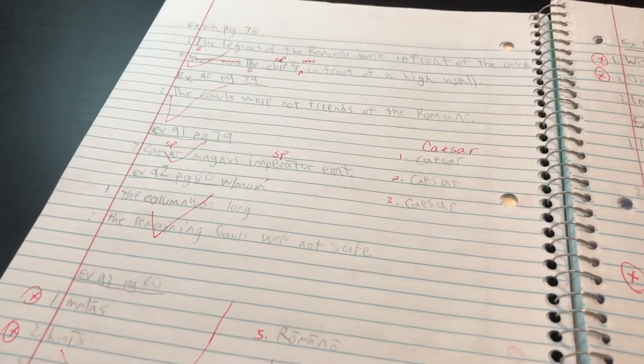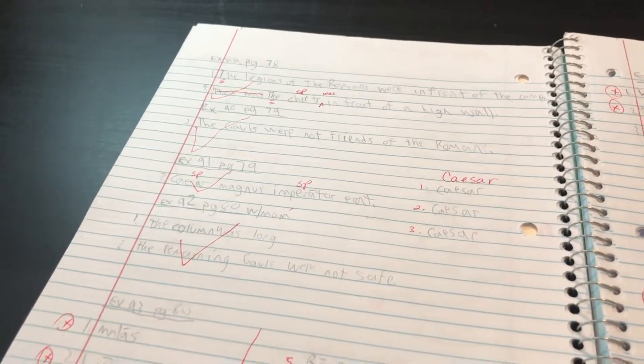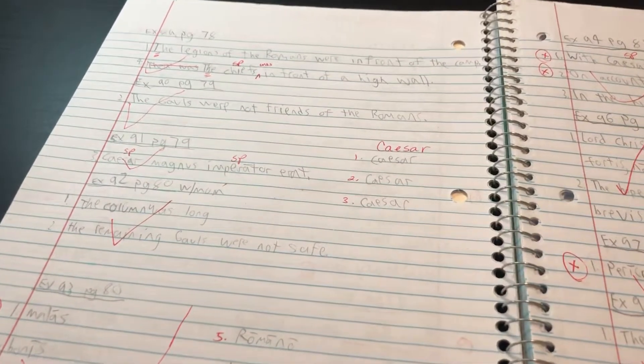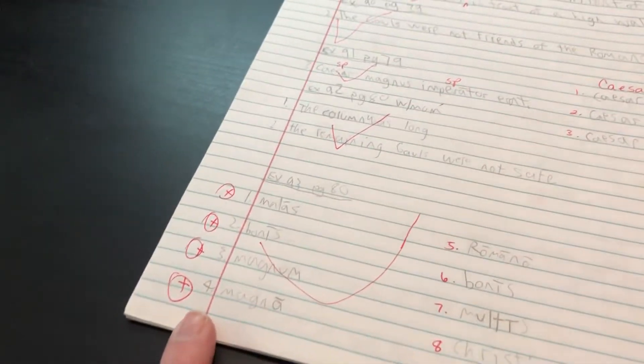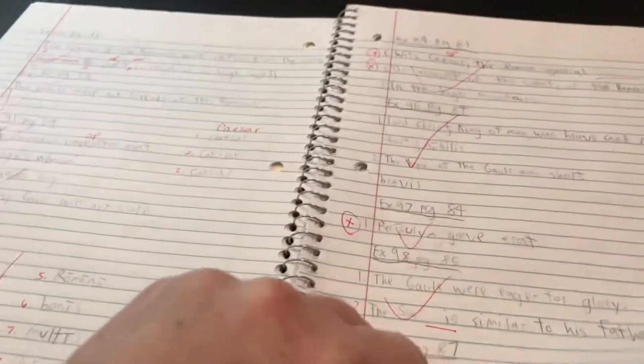So he uses the workbook that I made for declining, conjugating, and just copy work to practice all the vocabulary. This book allows us to make corrections and if like for example here he made a bunch of mistakes, I made him do some more to try to hone in that particular skill.